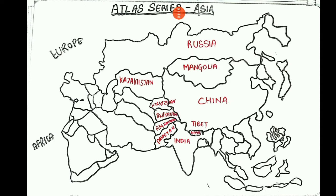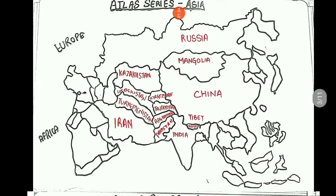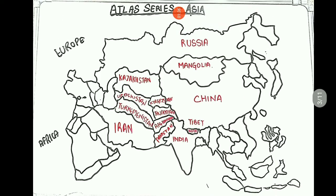Let's repeat the full strip again: Russia, Mongolia, China, Nepal, India, Pakistan, Afghanistan, Kazakhstan, Kyrgyzstan, Tajikistan. Moving to the next segment — three countries: Iran, Turkmenistan, Uzbekistan.